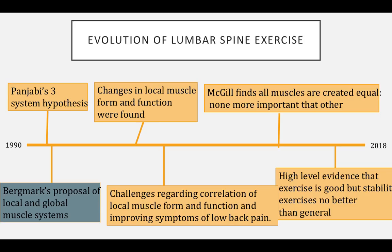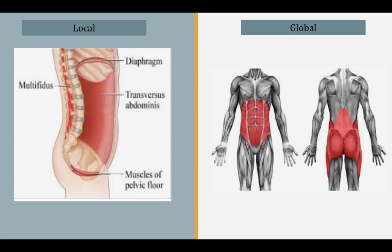Burgemark further broke down the active subsystem into local and global muscle systems. The local muscles consist of the transverse abdominis, multifidus, diaphragm, and pelvic floor. These are made up of mostly type 1 fibers, thus they are fatigue resistant. When all is good, they are continuously on at a low level — tonic contraction — and their activation is independent of direction of movement, and they are anticipatory, meaning that they fire before other movements or muscle contractions occur. They help control a neutral joint position and control joint motion between segments. In pain states, they tend to underfire.